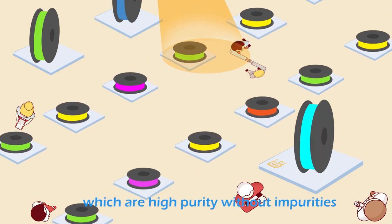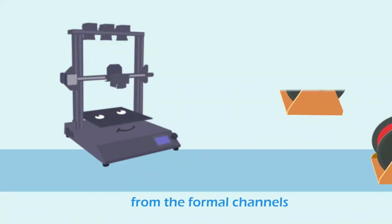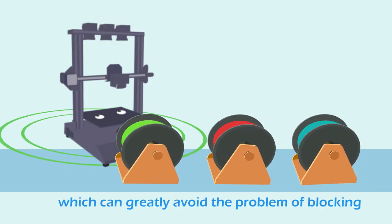First of all, we need to get filaments which are high purity without impurities from the formal channels, which can greatly avoid the problem of blocking.